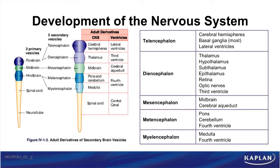The adult derivatives of the telencephalon include the cerebral hemispheres, most of the basal ganglia, and the lateral ventricles. The diencephalon gives rise to the thalamus, hypothalamus, subthalamus, and epithalamus, which includes the pineal gland.